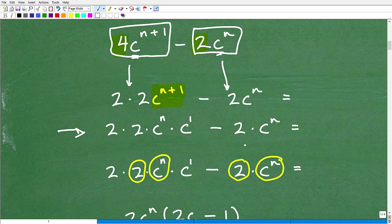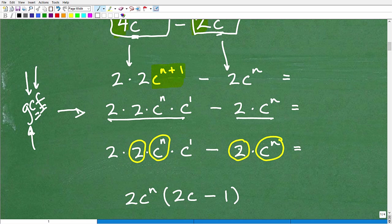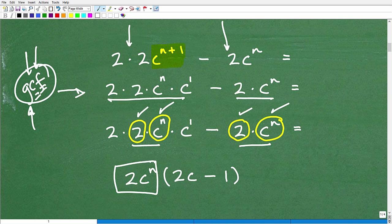Now, we have some things to look for. Can I pull out a greatest common factor? We're looking for factors that are in common. We want to pull out as many as we can. So looking at this, they have this 2, they have a 2 in common. So I'm going to circle that because that's going to be part of my GCF. Now, if I look closely, I have a C to the N here, and I also have a C to the N here. So 2 times C to the N is going to be my GCF.